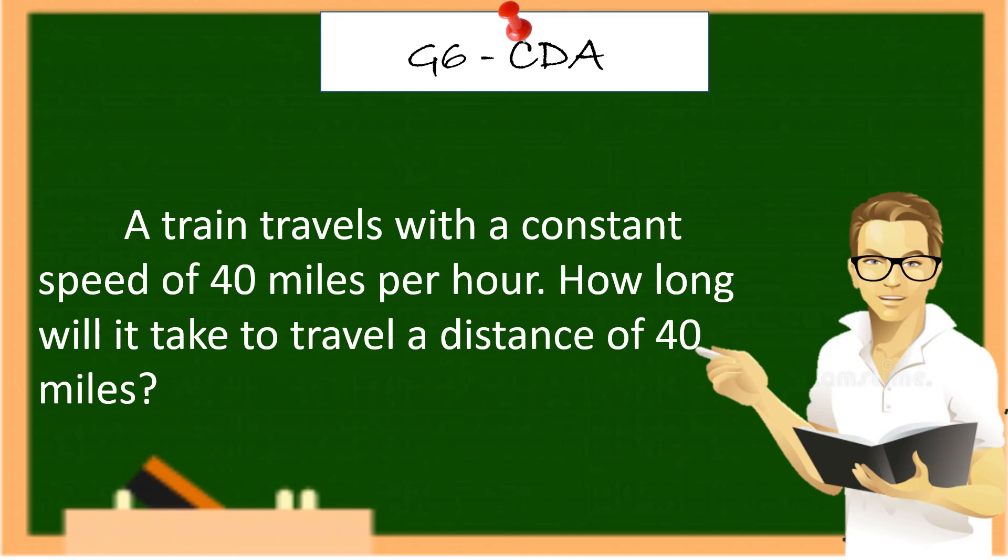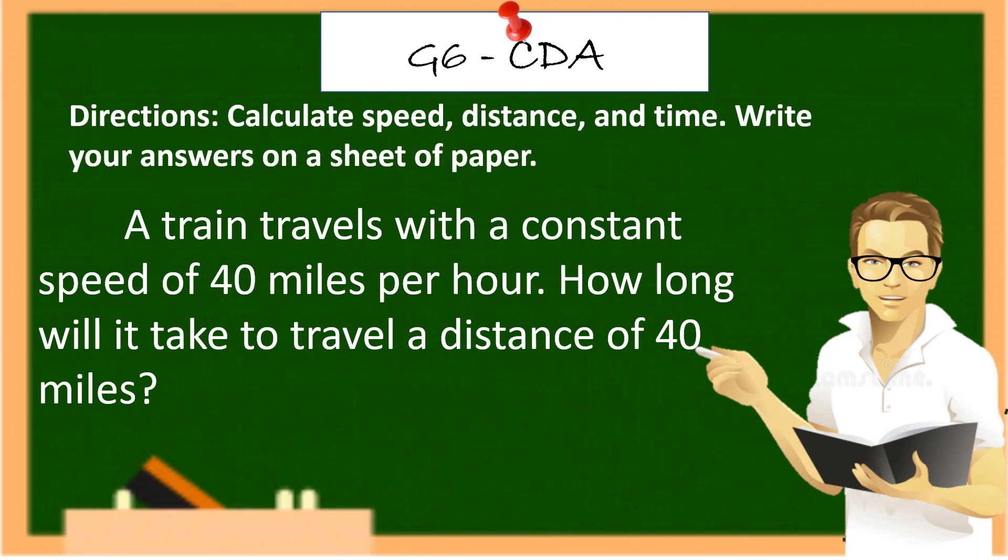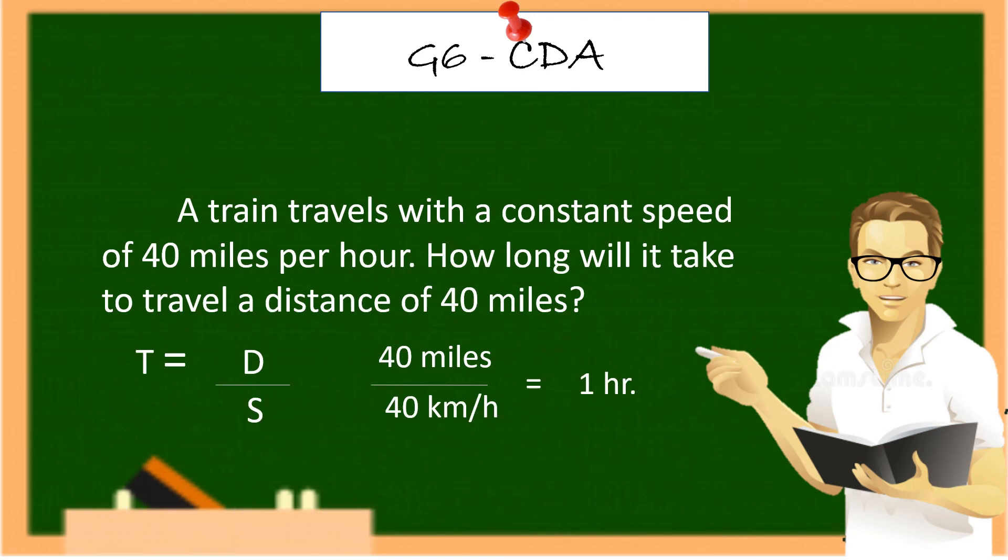A train travels with a constant speed of 40 miles per hour. How long will it take to travel a distance of 40 miles? So time equals distance over speed. The distance is 40 miles divided by 40 miles per hour. The answer is 1 hour.